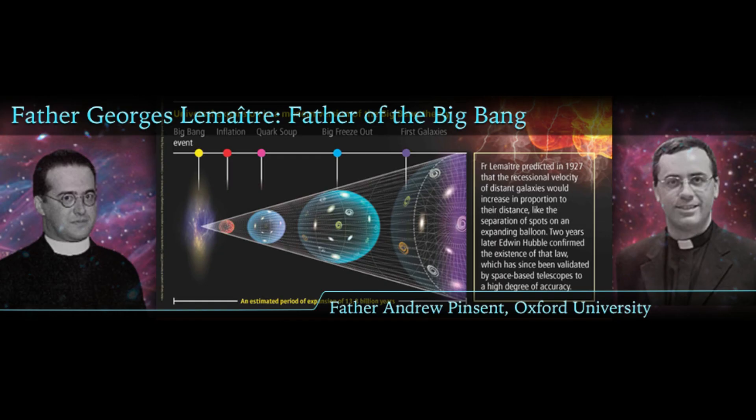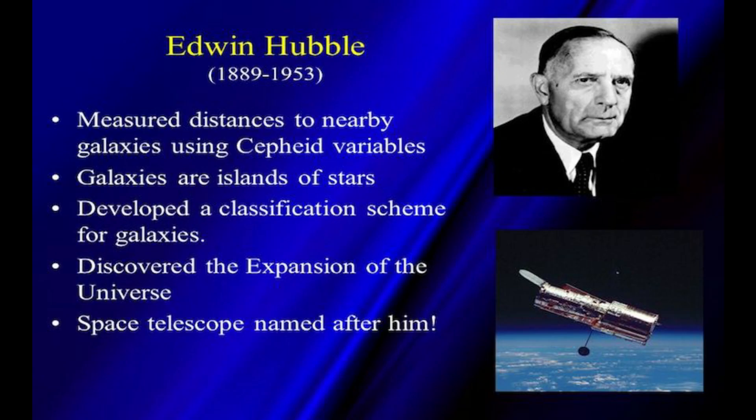In 1927, Georges Lemaître proposed that the universe is expanding, showing that galaxies exhibit a red shift. In 1929, Edwin Hubble confirmed this, observing red-shifted light from distant galaxies and establishing that the universe is expanding.